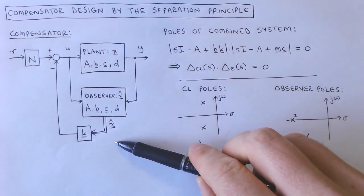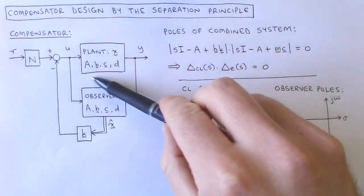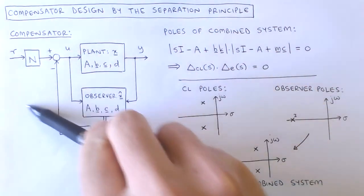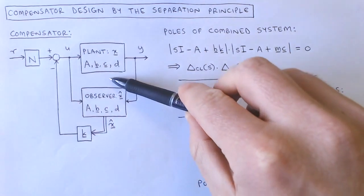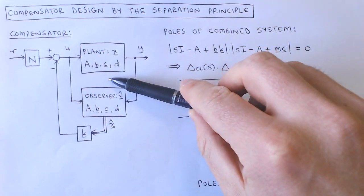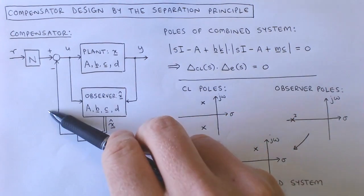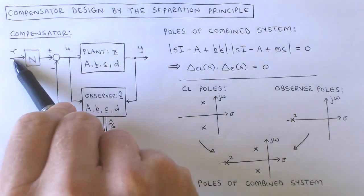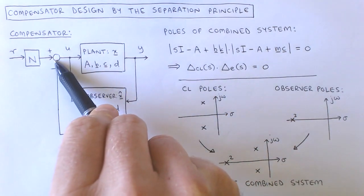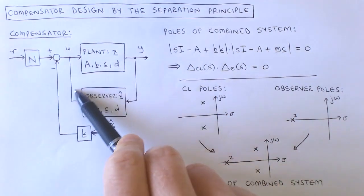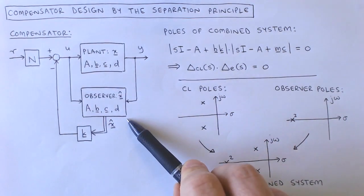This diagram shows the plant and full state variable compensator. The compensator has three components: the state feedback, the reference feed forward, and the observer.